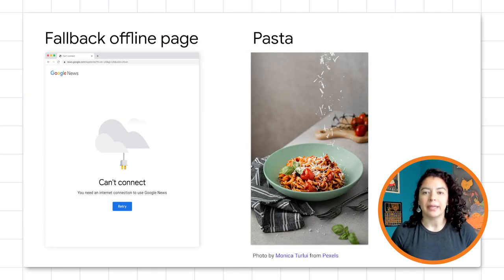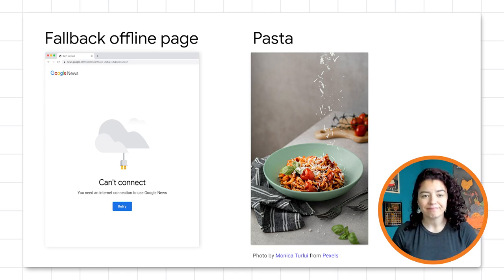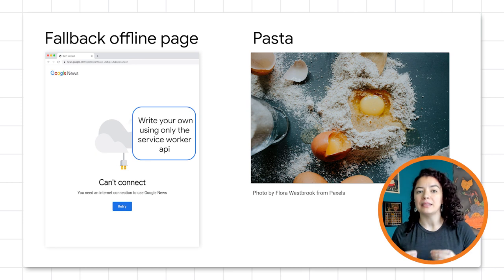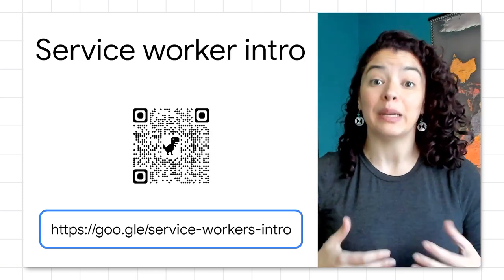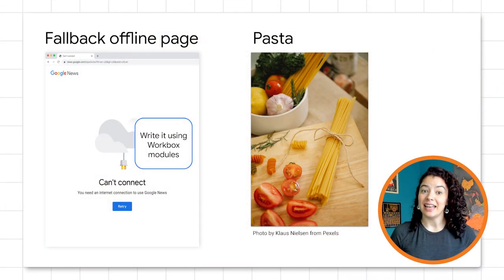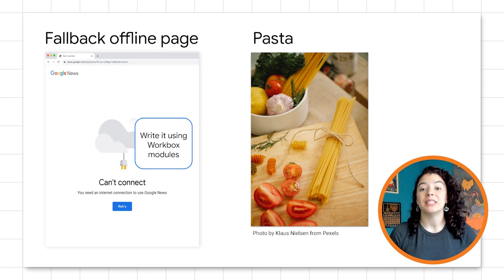So if we compare building an offline page with Workbox to cooking a bowl of pasta, one option could be to cook the pasta and sauce from scratch. That is the equivalent of implementing the fallback with just the service worker API. Next option, you could buy the pasta ready to cook and add your own sauce. That would be like creating the offline page with the Workbox libraries, which gives us flexibility, but the code can still be repetitive.